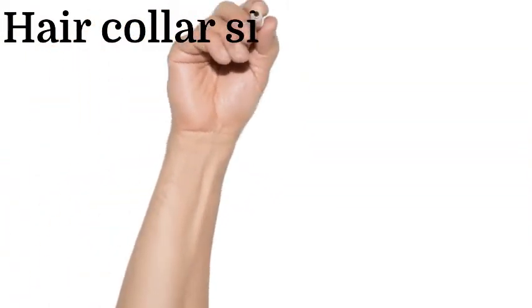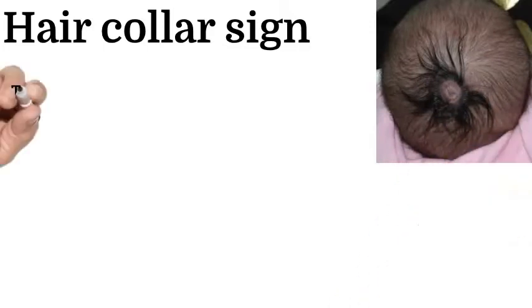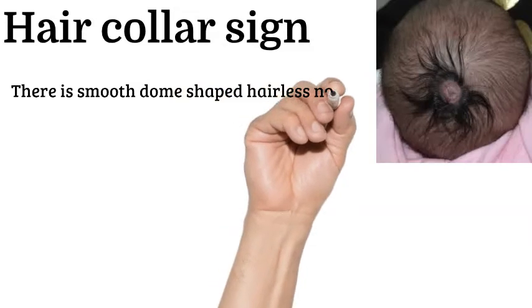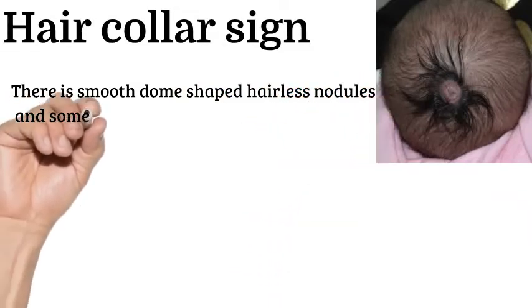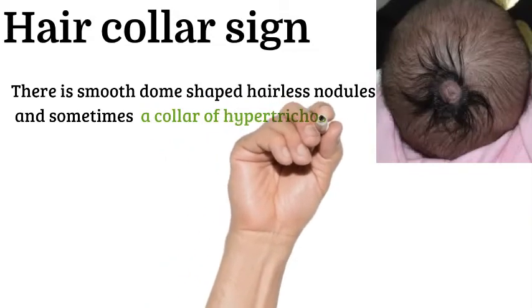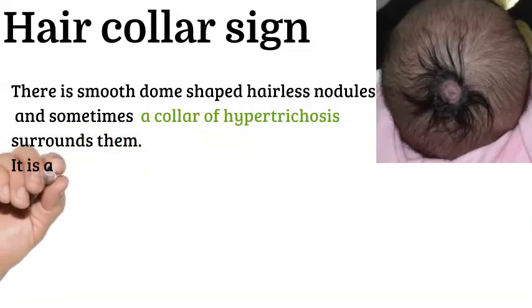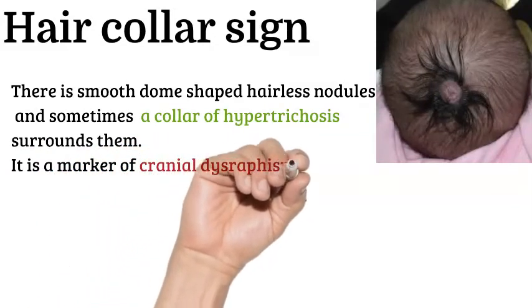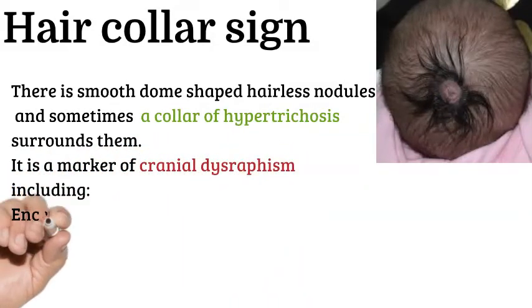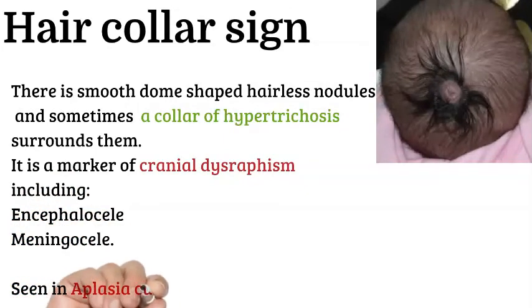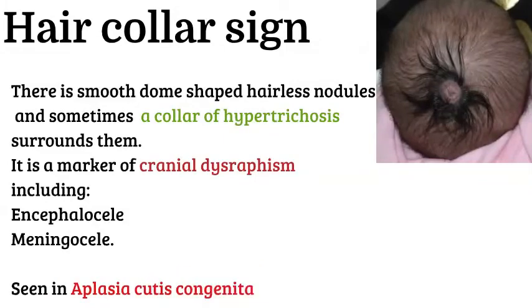Hair collar sign: as seen in this picture, there are smooth dome-shaped hairless nodules, and sometimes a collar of hypertrichosis surrounds them. This sign is a marker of cranial dysraphism, including encephalocele and meningocele, and is commonly seen in congenital skin conditions.